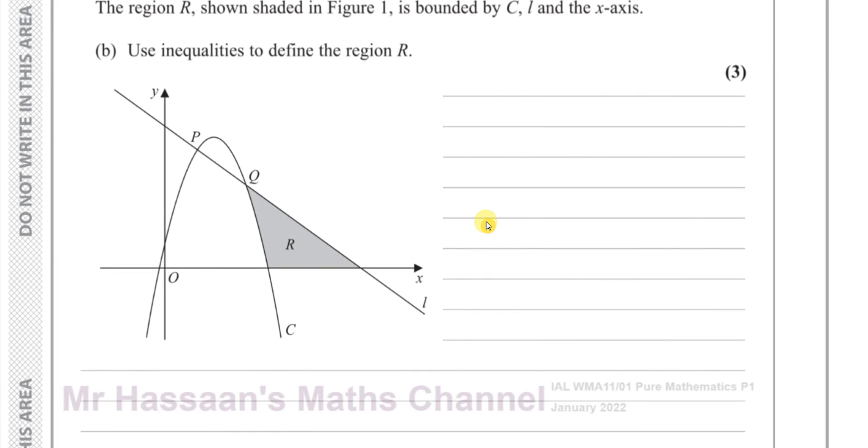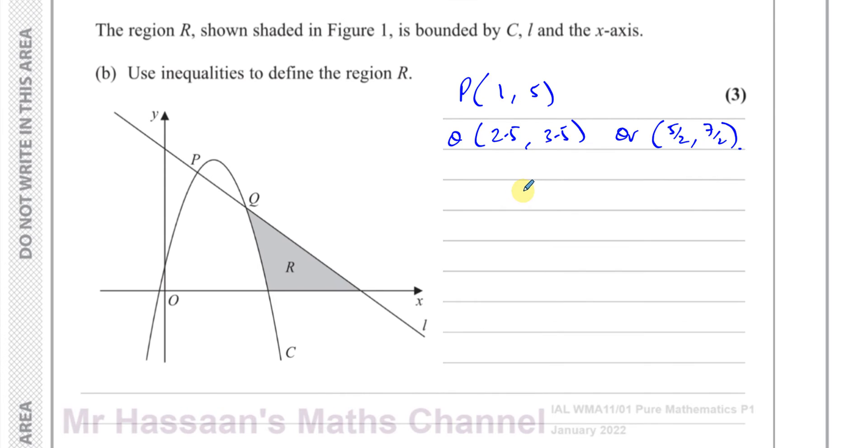Part B says: the region R shaded in Figure 1 is bounded by C (the curve), L (this straight line), and the x-axis. Use inequalities to define the region R. We can see that the region R is when these are solid lines.